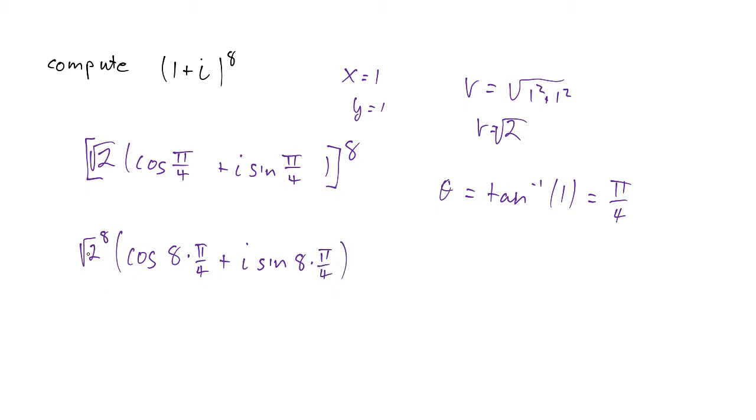Let's clean that up a little bit. Square root of 2 to the 8th, that's the same as 2 to the 4th, which is 16. Cosine of 8 times pi over 4, that would be cosine of 2 pi plus i sine of 2 pi.